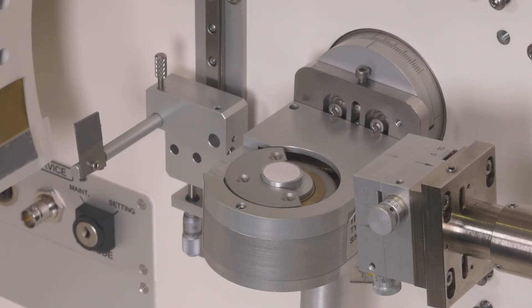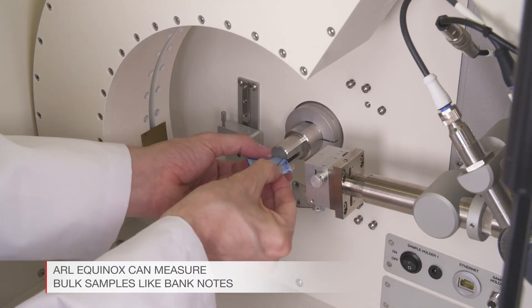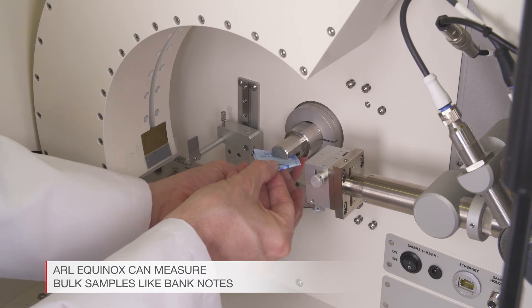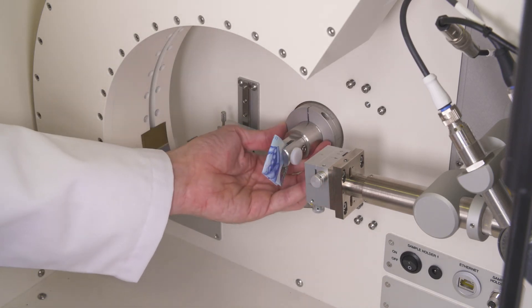For counterfeit analysis, the ARL Equinox is not only able to measure powders, but also bulk samples like banknotes. Such samples can be clamped and measured in transmission or reflection.